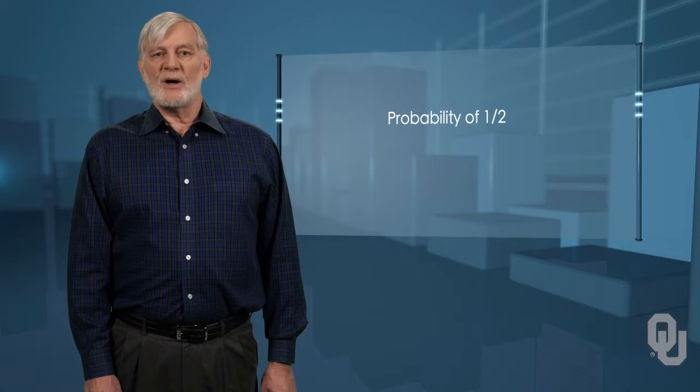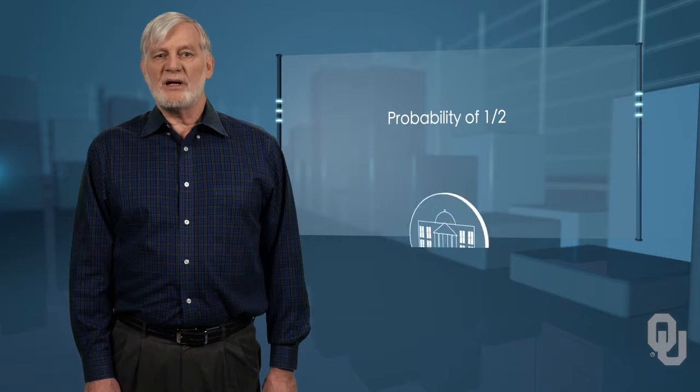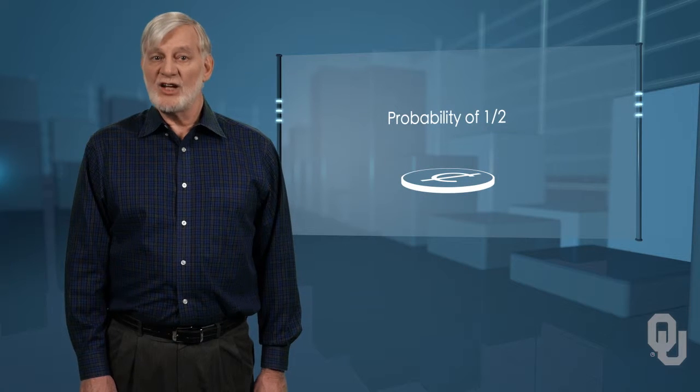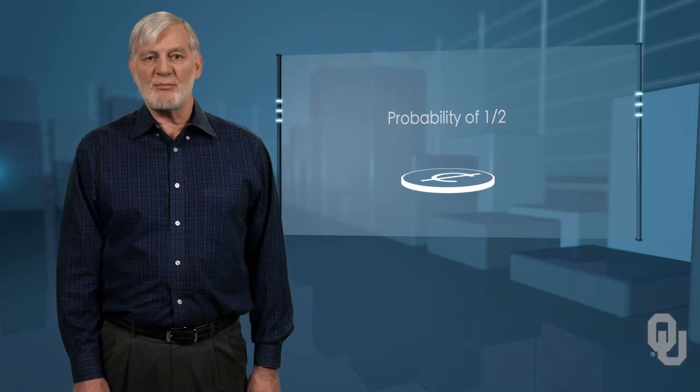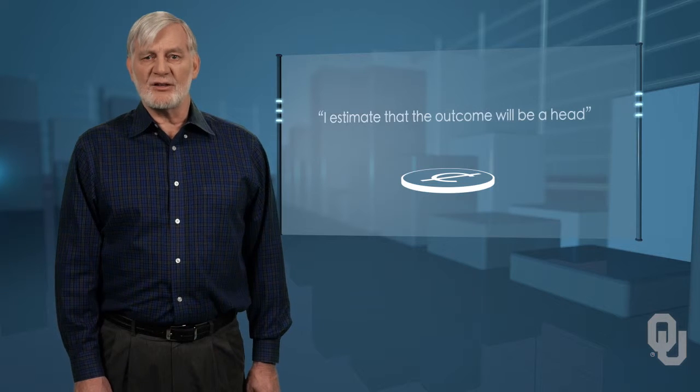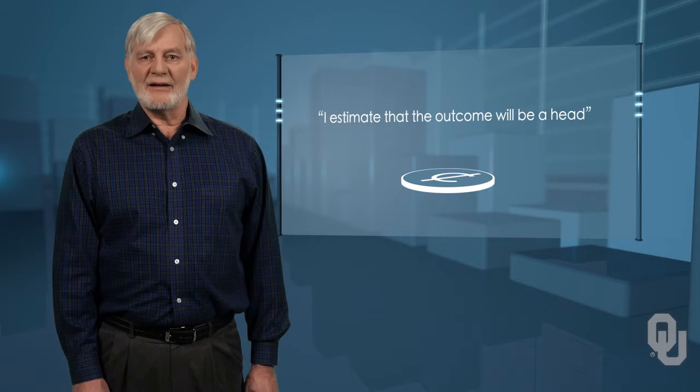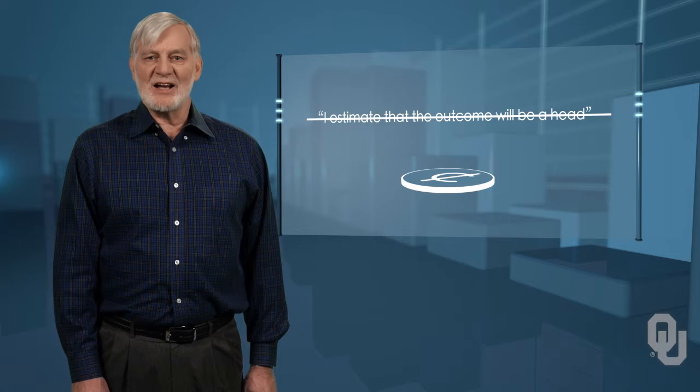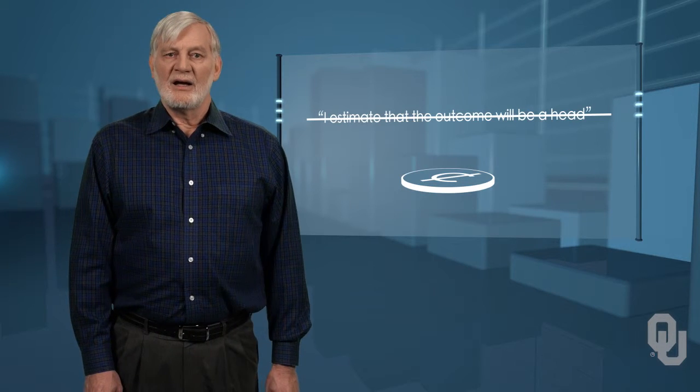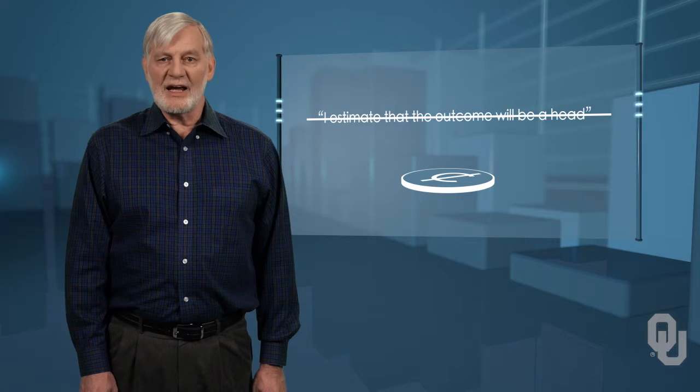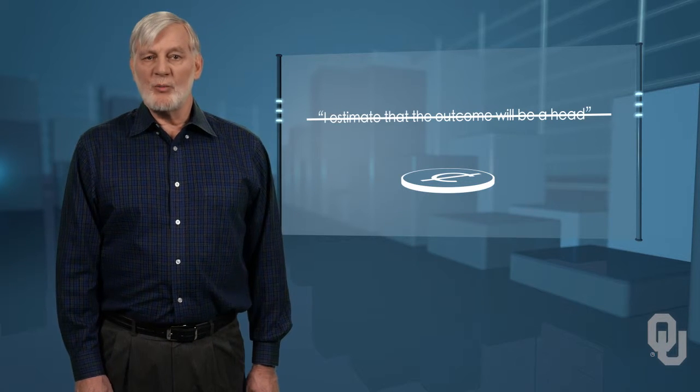As another example, it is a probability of one-half that a head will be the outcome if you flip a coin. And this is not an estimate. If we tried to say this as an estimate, the syntax of our very language stops us and shows us the difference. How might we try to say it? I estimate that the outcome will be a head. This doesn't even sound right to us. This is because this is not an estimate. It is purely your speculation, and we can see right away it conveys no meaning.